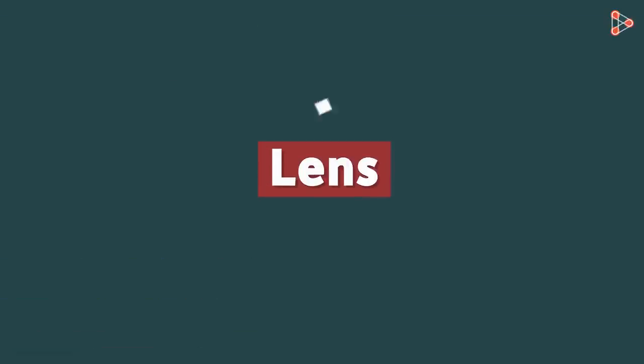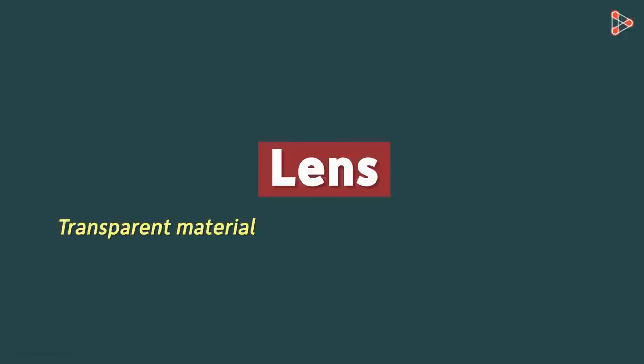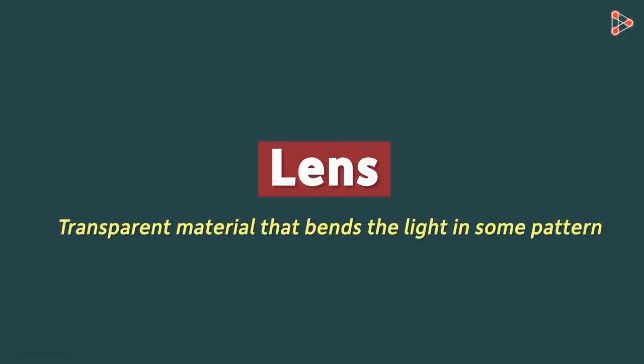So what is a lens? In simple language, we can say that a lens is a transparent material that bends light in some pattern. The pattern in which the lens bends light depends on what type of lens it is.